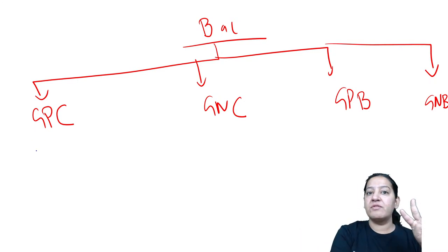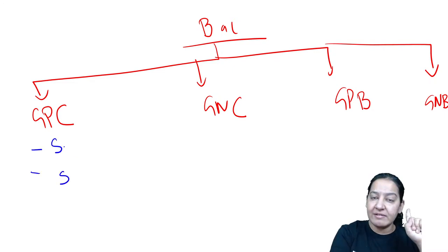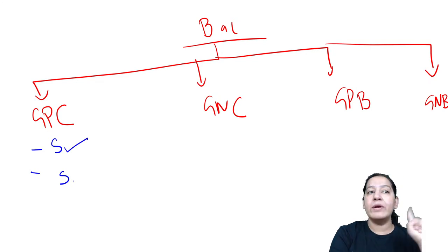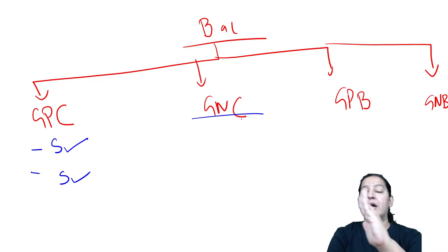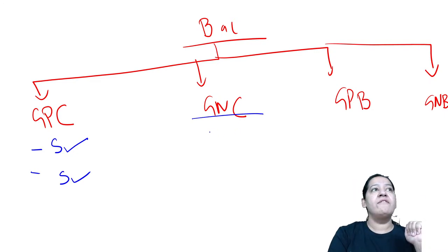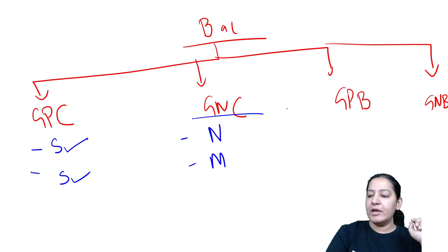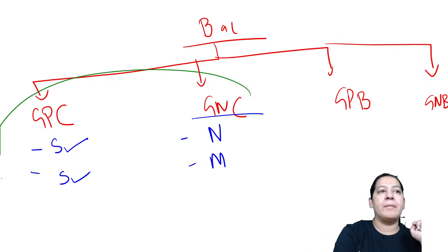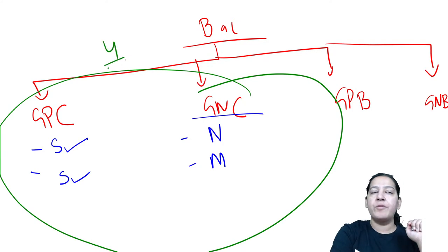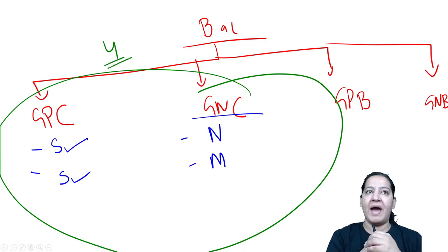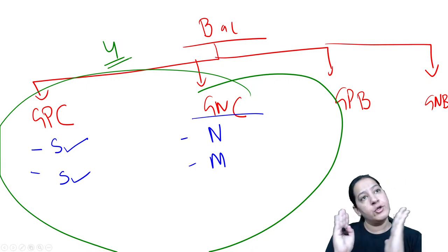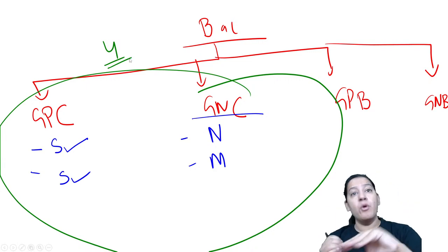Gram positive cocci are of two types: Staphylococcus and Streptococcus. Yesterday we studied Staphylococcus; now it is time to study Streptococcus. After Streptococcus, we will move on to gram negative cocci — Neisseria and Moraxella. So total in the cocci family, there are four bacteria: two gram positive and two gram negative.